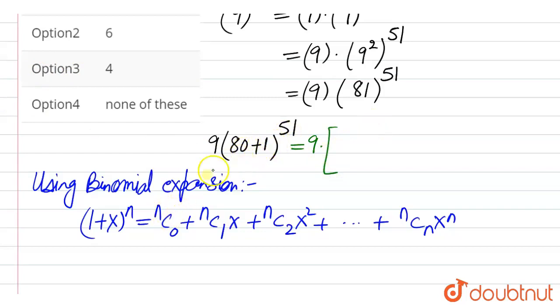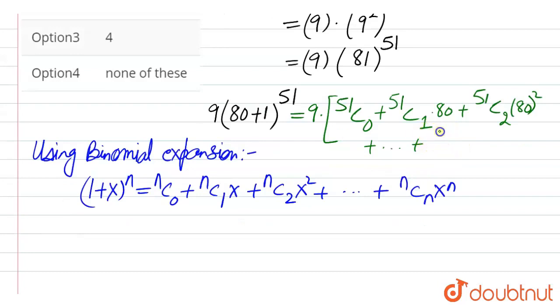Here in place of x we have 80, so this becomes 51C0 plus 51C1 into 80 plus 51C2 into 80 squared, here like this up to... and the last term would be 51C51 into 80 to the power 51. So this is the series.